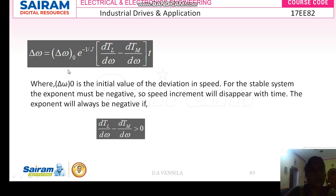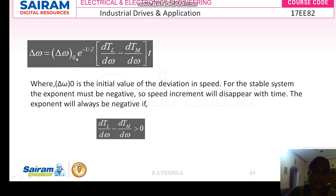Considering the initial speed, the deviation in speed is multiplied with a negative exponential value. We multiply with a negative exponential — such as e^(-1), e^(-2), e^(-3) — because as time increases, the speed should diminish. Here, del_omega_0 is the initial value of the speed deviation, multiplied by the negative component. This gives us (dT_L/d_omega) minus (dT_m/d_omega) greater than zero, showing the equilibrium state.